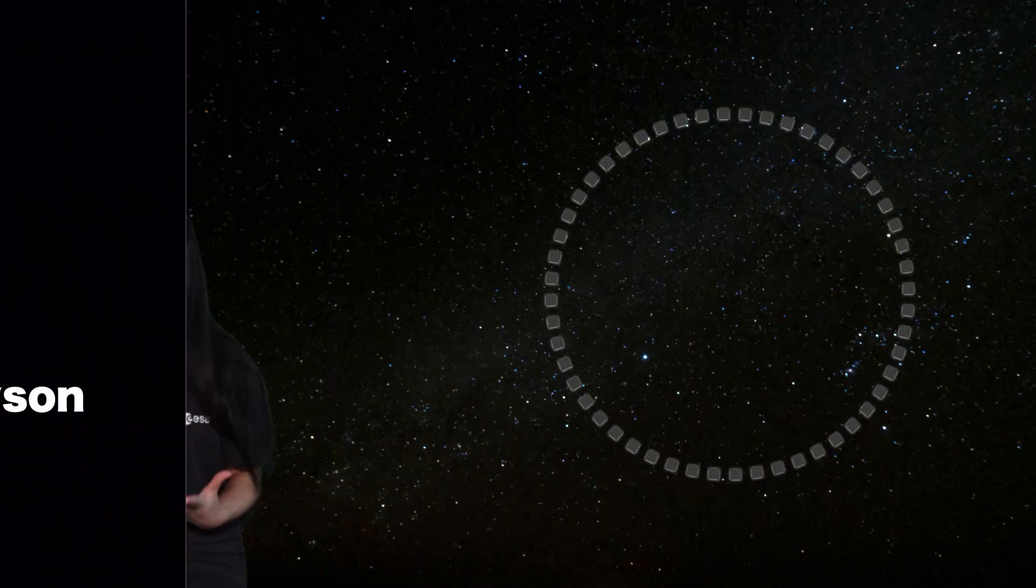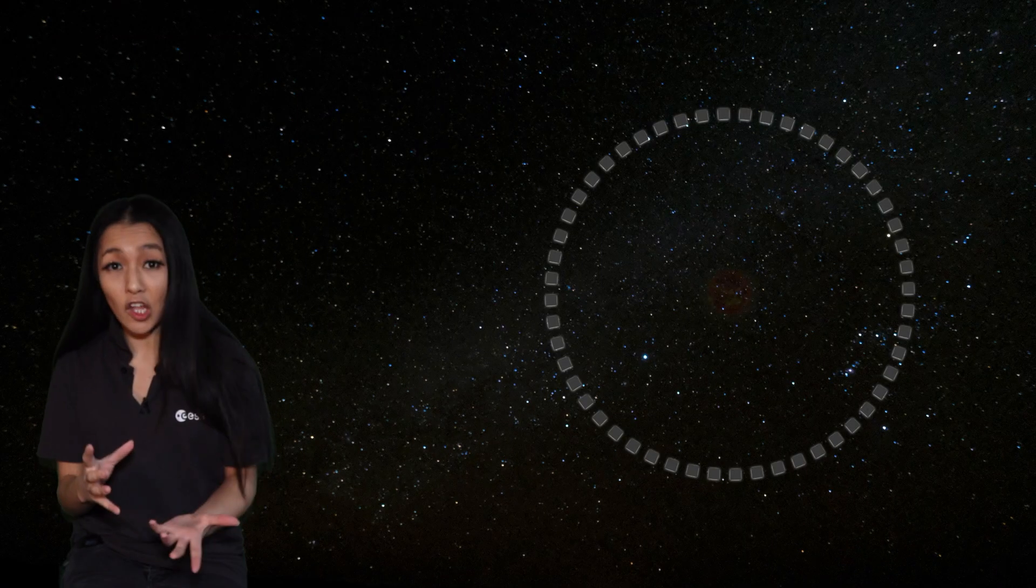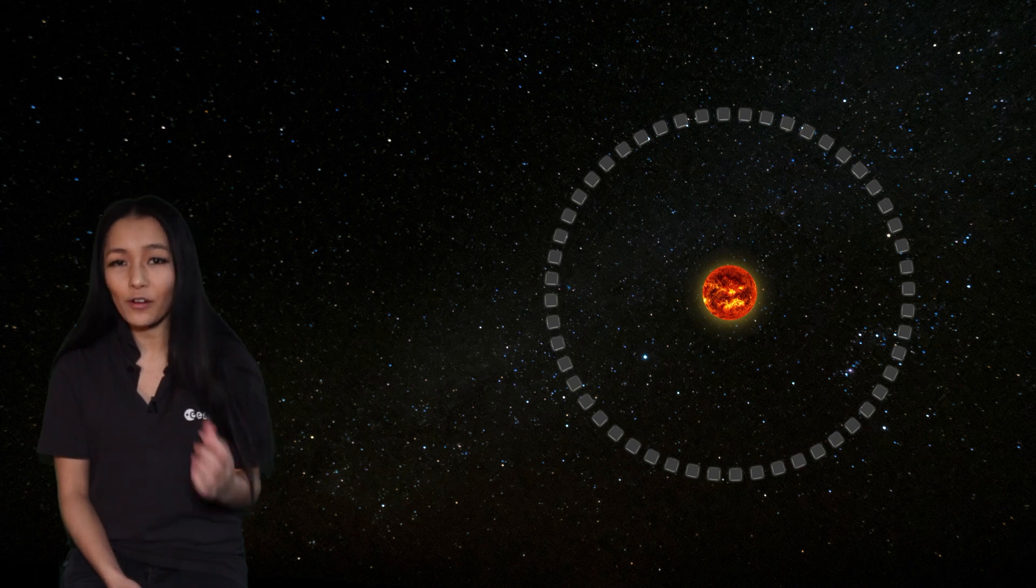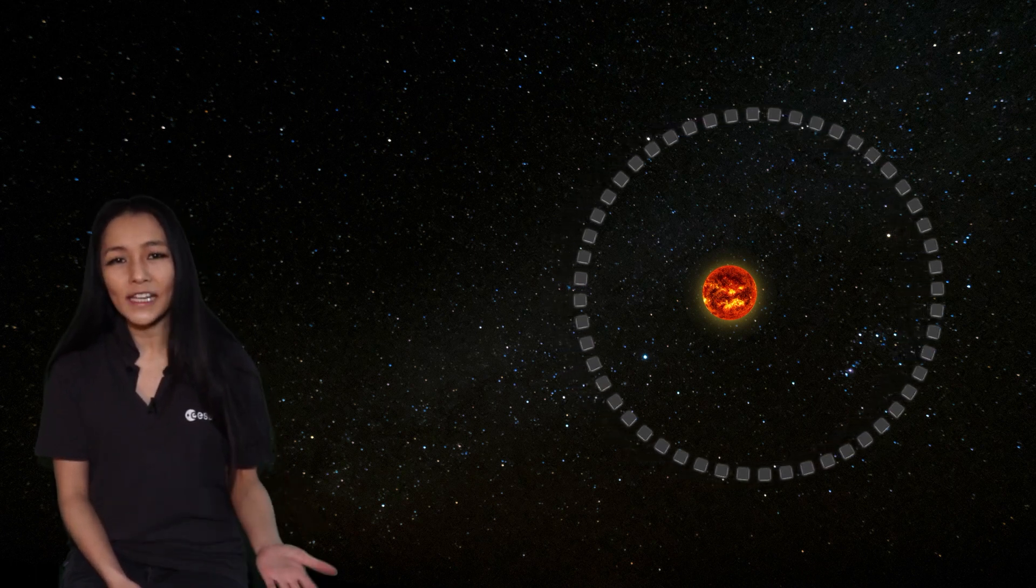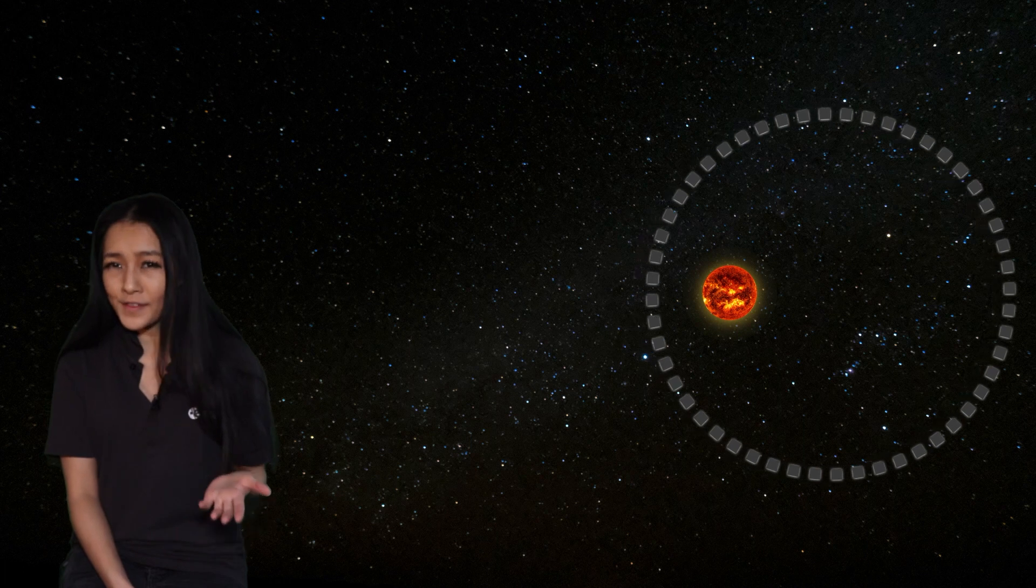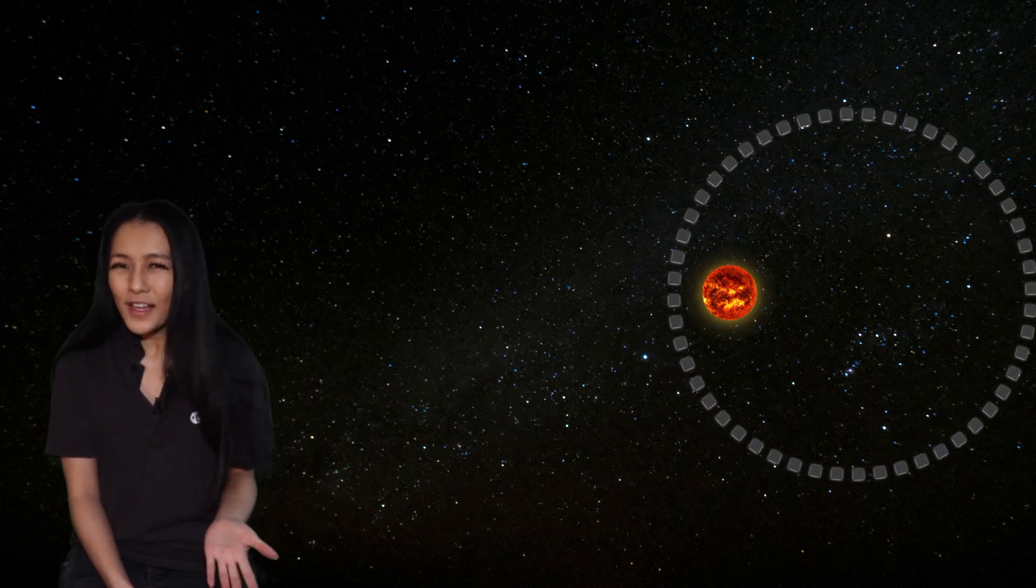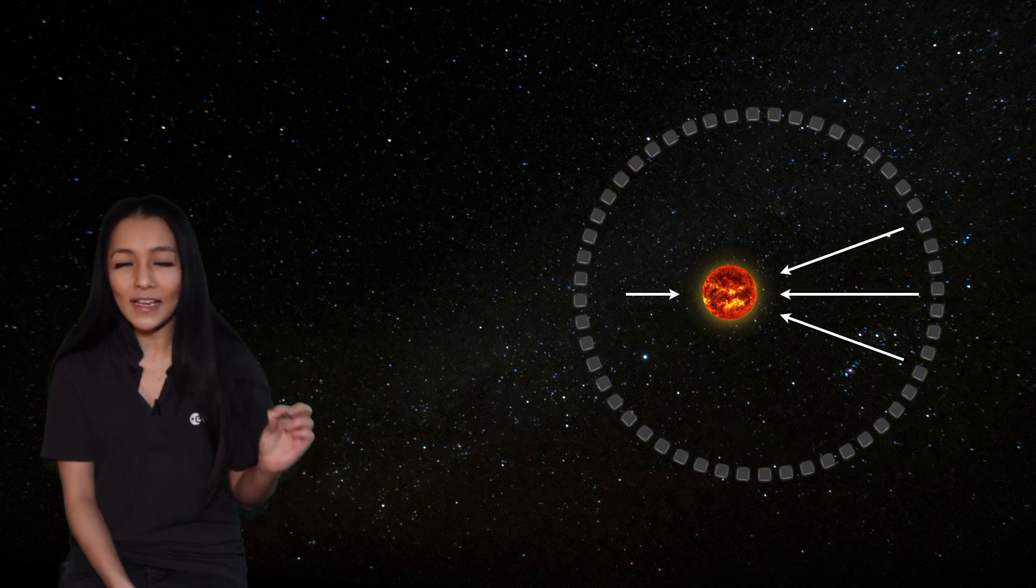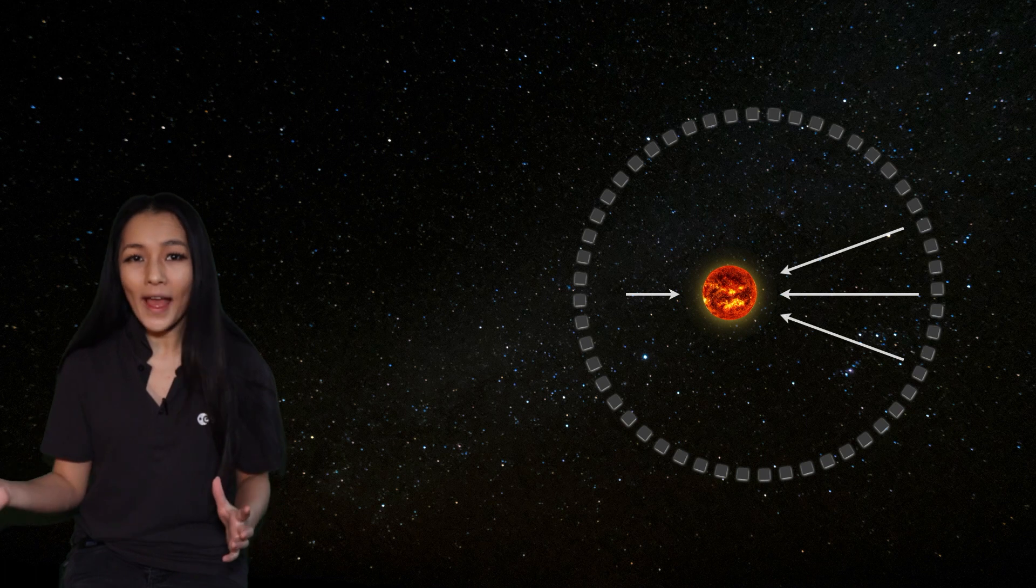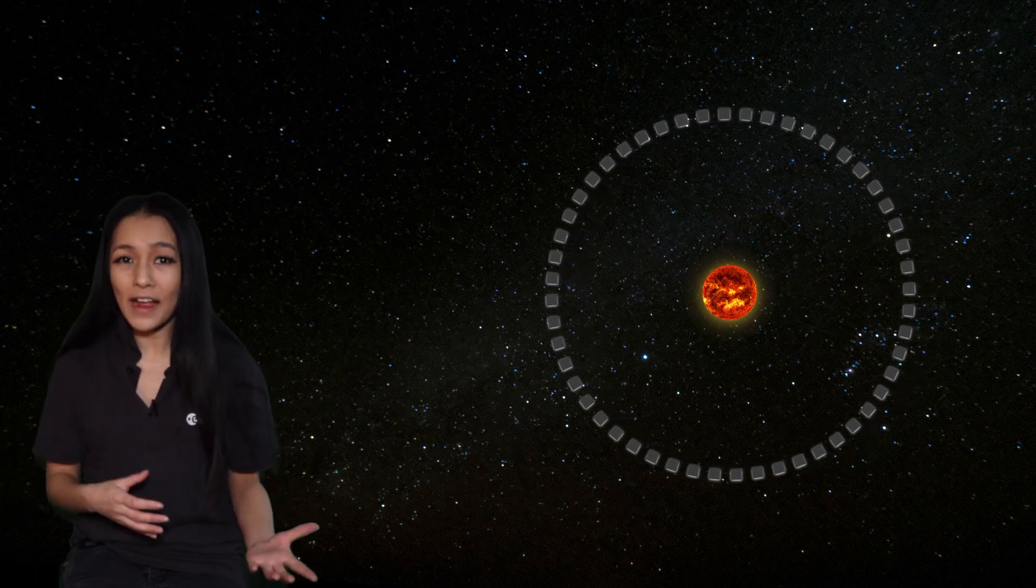At first you might think that a completely solid uniform Dyson sphere would be unstable because even if the Sun were a little bit off-center, the gravity of the Sun surely would pull the Dyson sphere more and more on the closer side making it even more off-center, right? However this isn't quite the case because for the one point on the sphere that is closer, there are many more points that are further away and this tends to pull it back in the other direction.